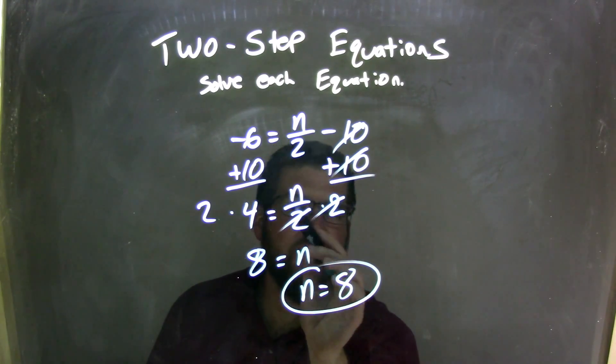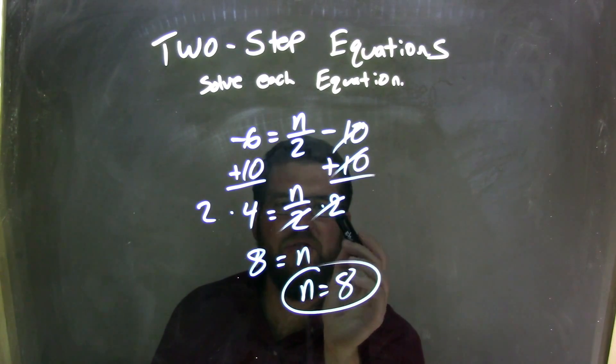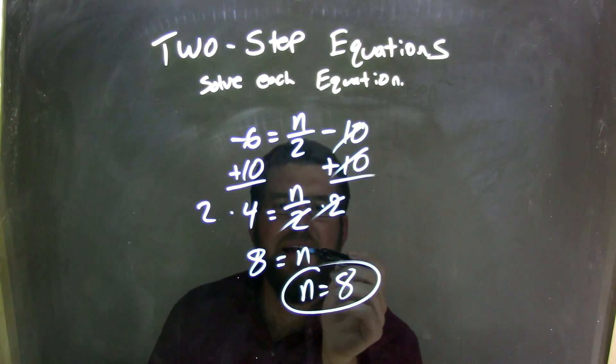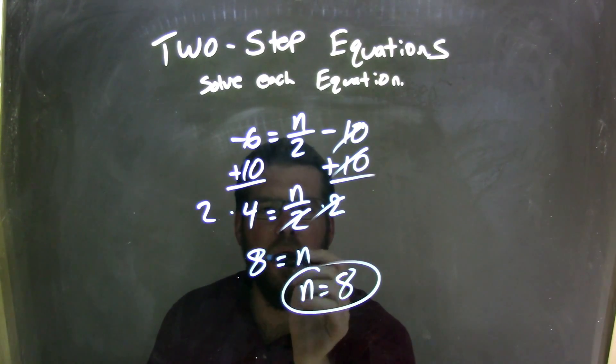I then saw there's division going on here, n divided by 2, and the opposite of division is multiplication. So I multiply by 2 on both sides, canceling the 2s out, leaving just n on the right and 2 times 4 being 8 on the left.